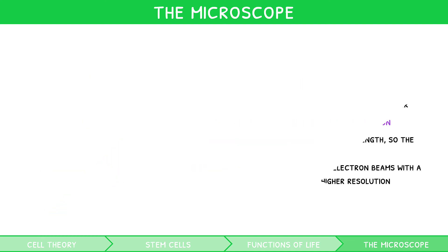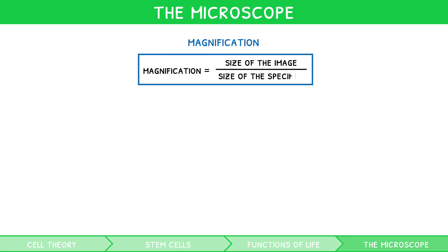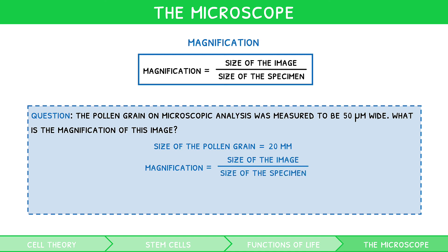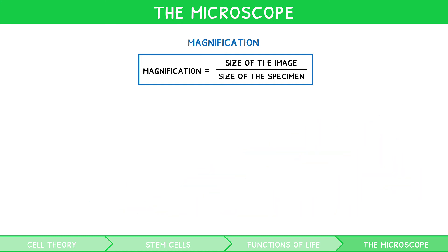In the exam, you need to be confident in calculating the magnification of a provided microscopic image. To do this, you should use the key formula: magnification equals size of the image divided by size of the specimen. In this formula, your measurements must be in the same units. Let's look at a question. The pollen grain on microscopic analysis was measured to be 50 micrometers wide. What is the magnification of this image? In the exam, you would start by measuring the size of the pollen grain on your paper using a ruler. Let's say it was 20 millimeters. Then, using the formula and converting our units, magnification equals size of the image divided by size of the specimen, which would give us a magnification of 400. Simple. If you are struggling to convert the units for each measurement you may encounter, learn this handy table.